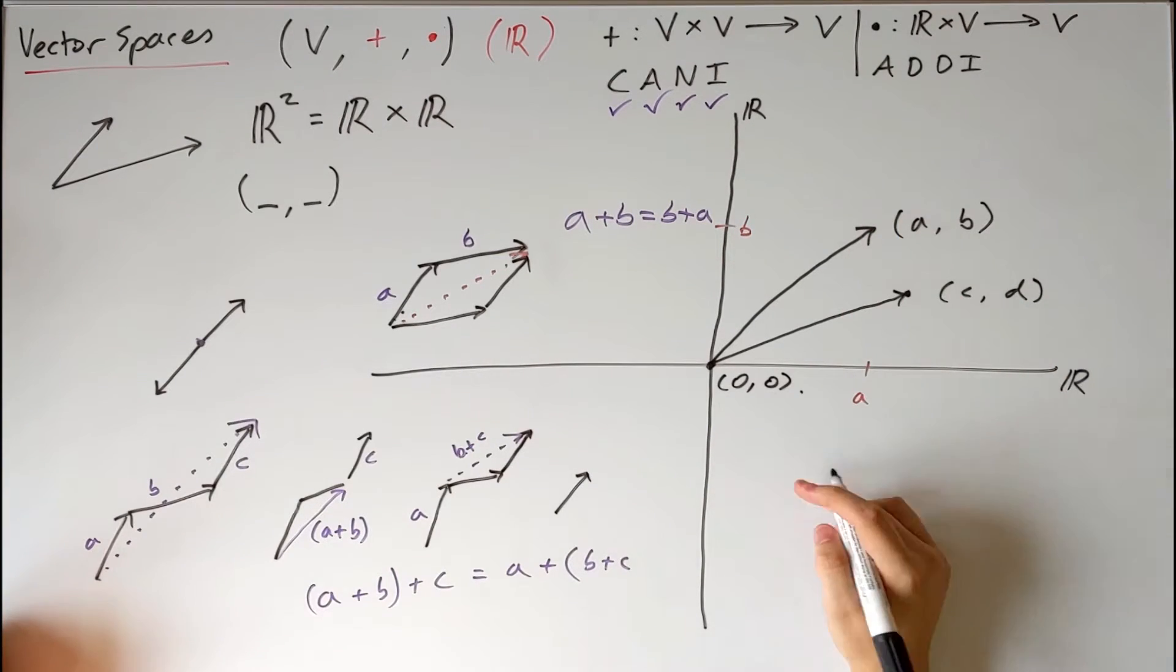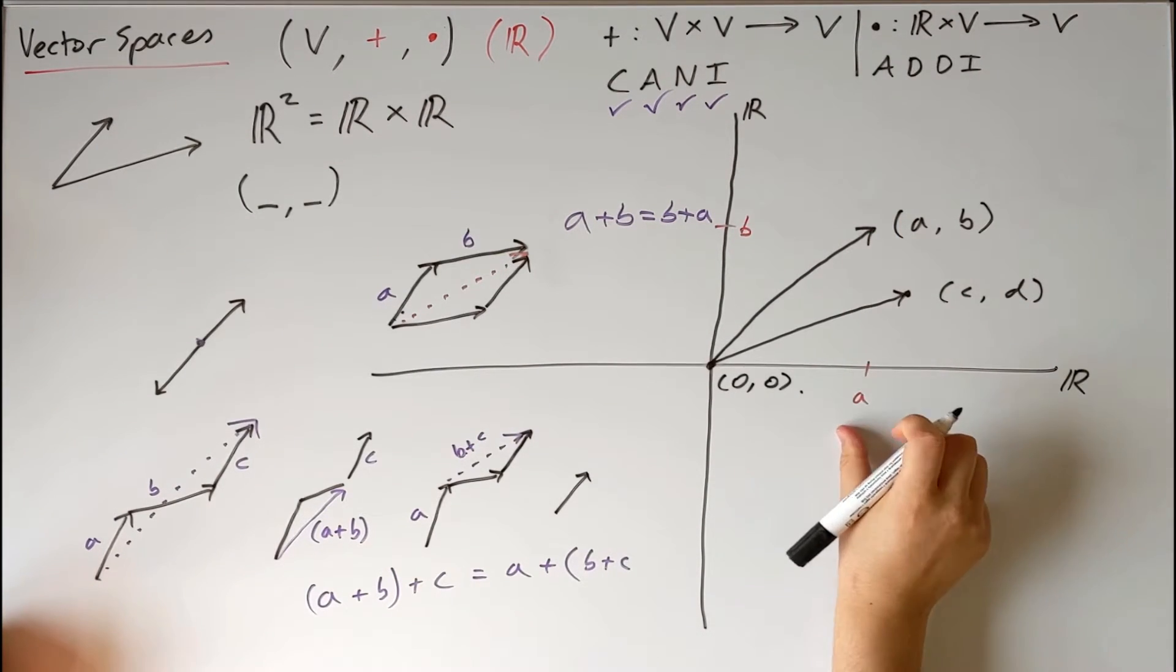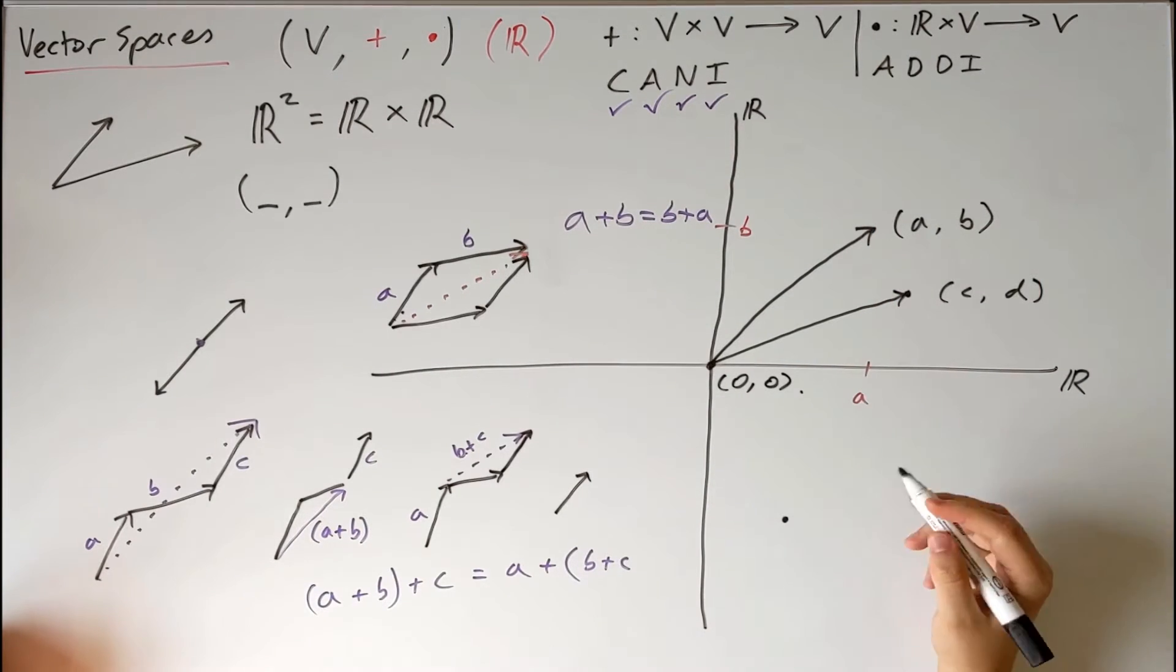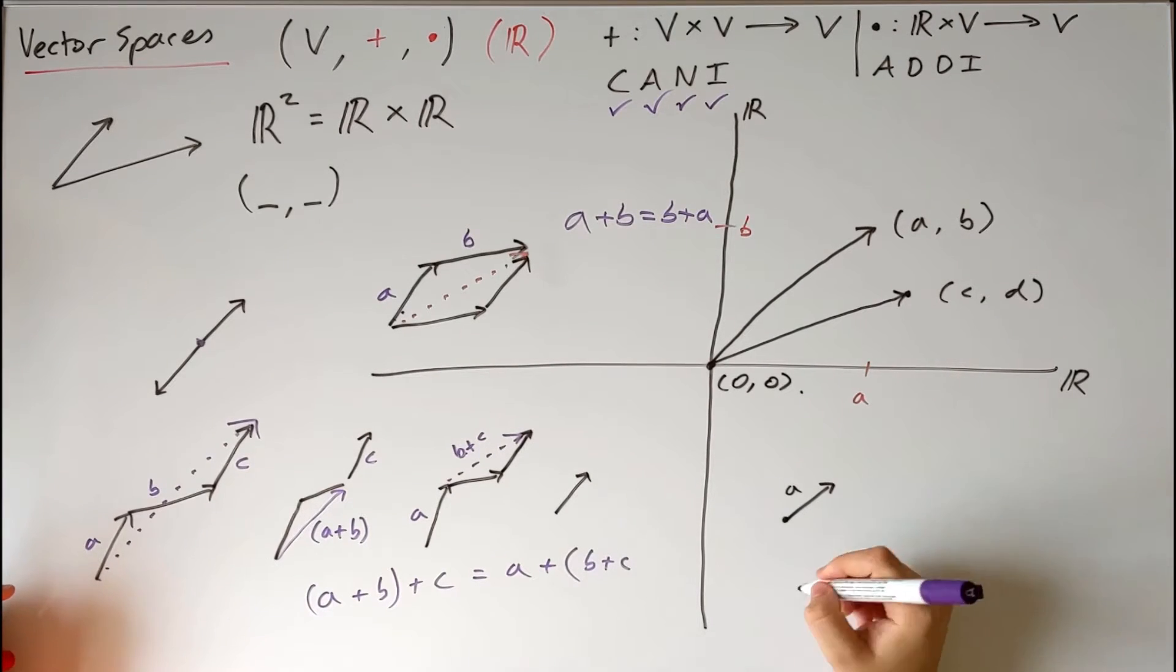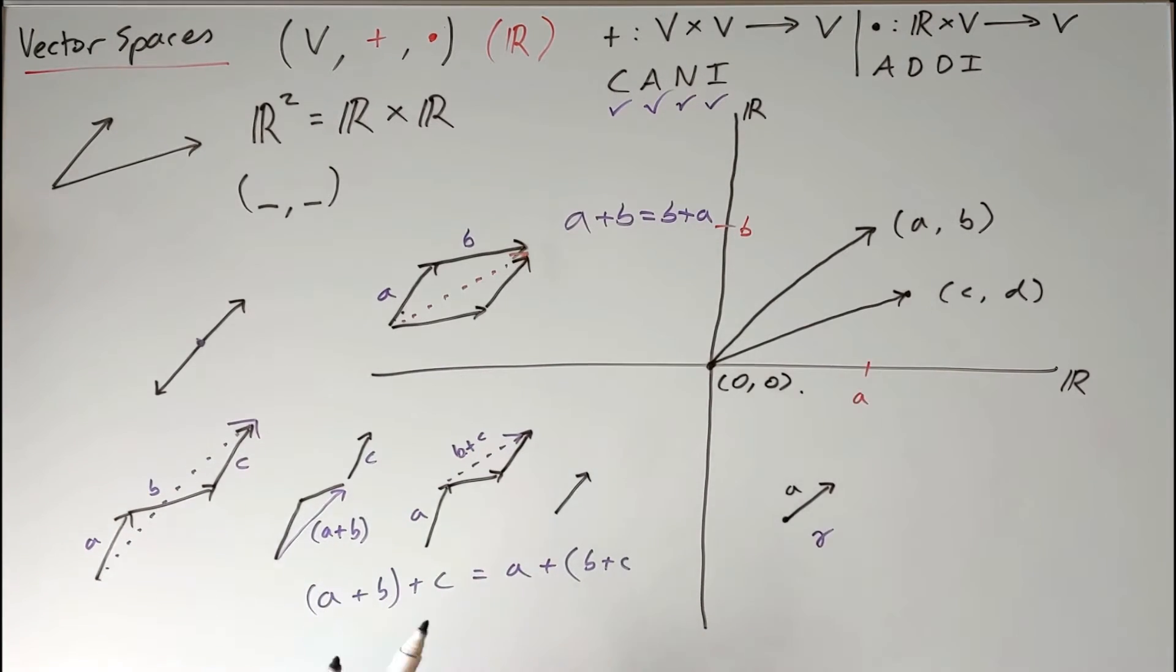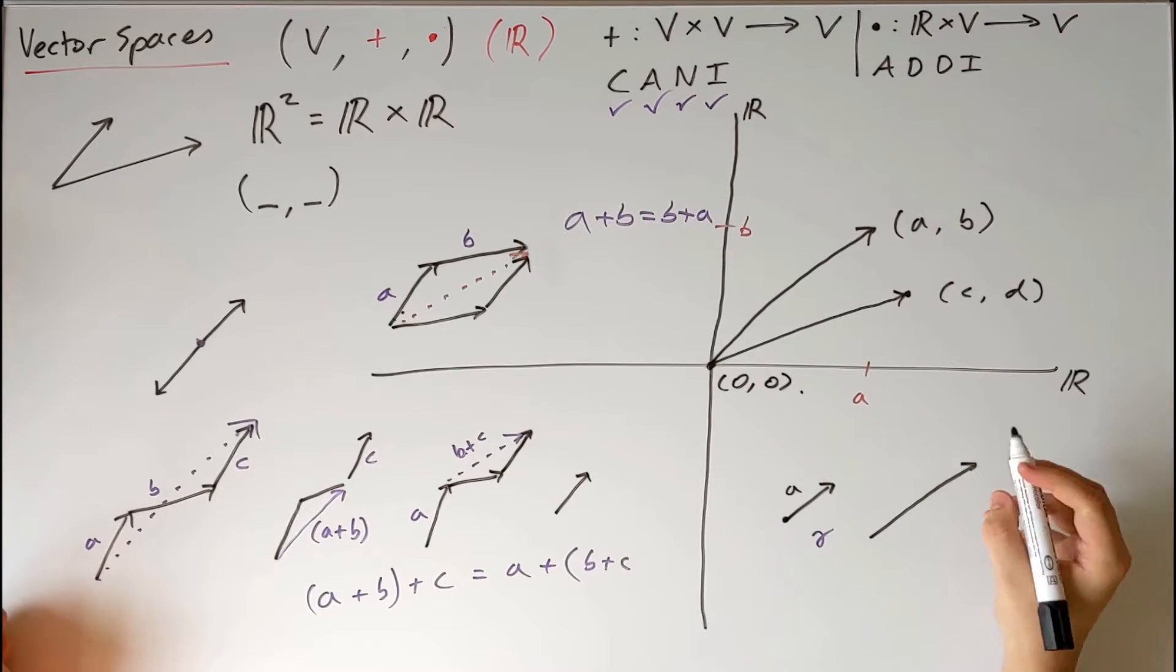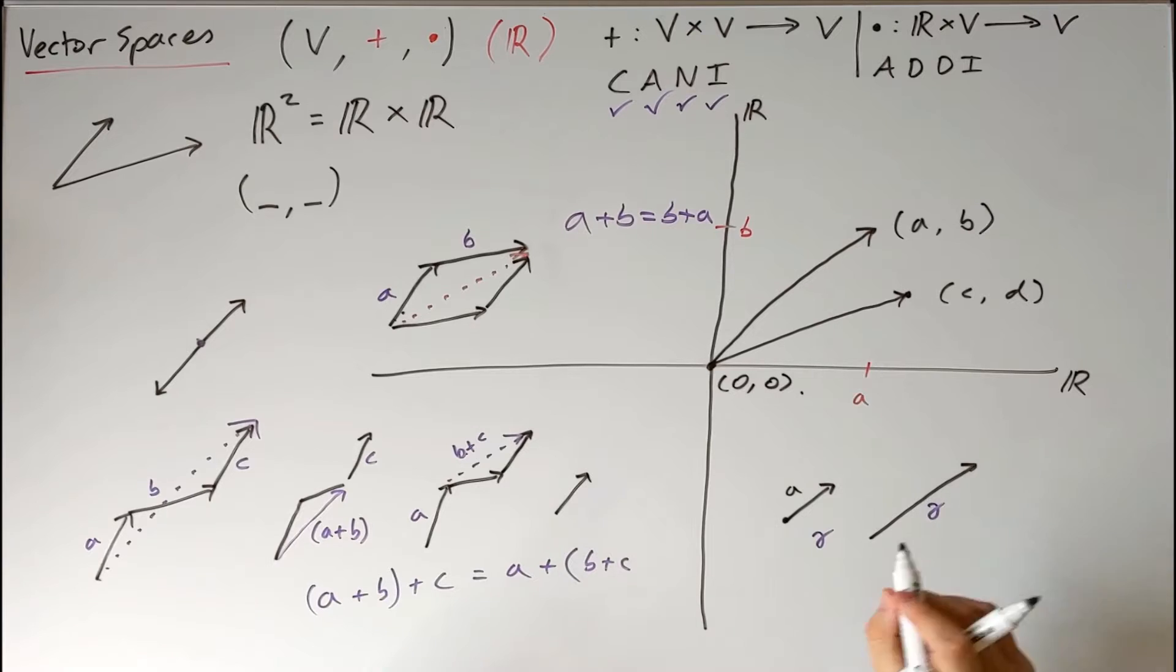And now it's fairly trivial to consider the scalar multiplication operation, which simply takes any vector, call it A, and then if we choose some number, say γ, the resulting vector is going to just be γ scalar multiplied A. Now in our case, because the vectors that we're dealing with come from a set ℝ, which is also the underlying field that we're using, this simply just reduces to multiplying the vector components.